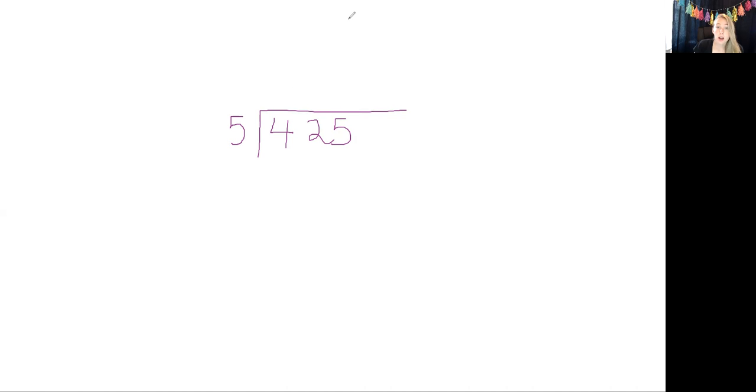So 5 can't go into 4. Some people will put an x right here, some people will leave a blank. But 5 can go into 42. How many times? 5 can go into 40 8 times. So 5 times 8 is 40. We're going to put an 8 here.